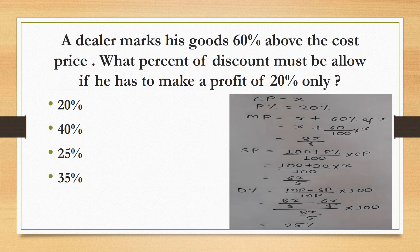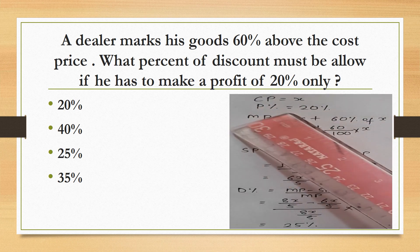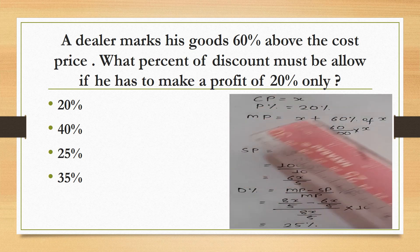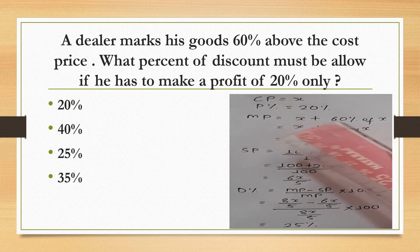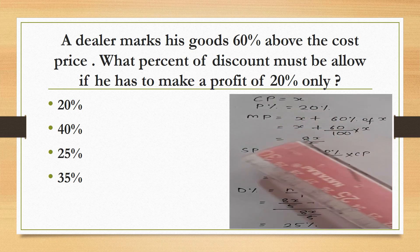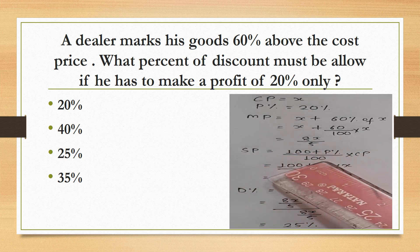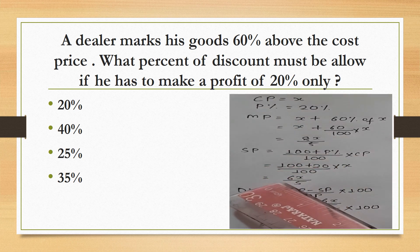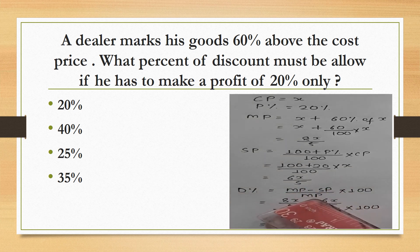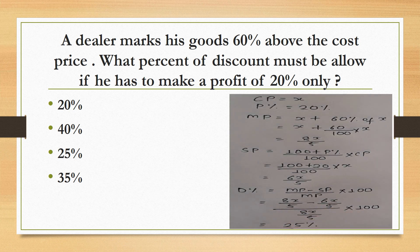A dealer marks goods 60% above the cost price. What percent discount must be allowed if he has to make a profit of 20% only? Let CP be x. The marked price is x plus 60% of x, which equals 8x by 5. The selling price formula gives SP as 6x by 5. The discount percent formula is (MP minus SP) upon MP into 100, that is (8x/5 minus 6x/5) upon 8x/5 into 100. This gives 25%.